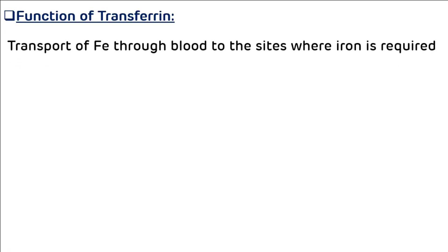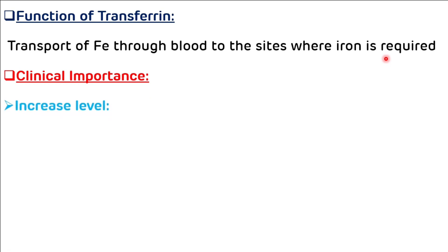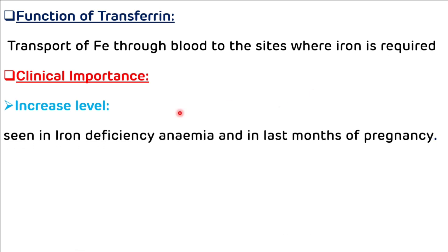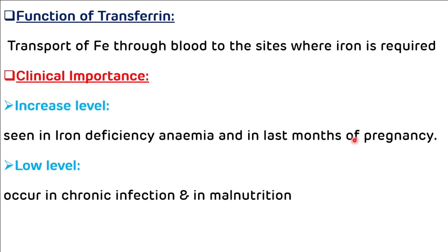Transferrin is involved in the transport of iron in the blood to the sites where iron is required. Clinically, increased levels of transferrin are seen in iron deficiency anemia and in the last month of pregnancy due to the prevalence of iron deficiency anemia. Low levels of transferrin are seen in chronic infection and malnutrition.